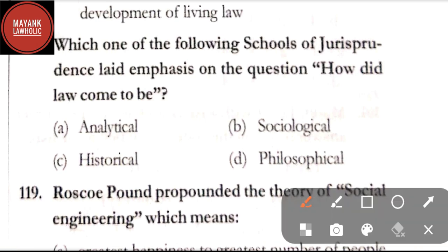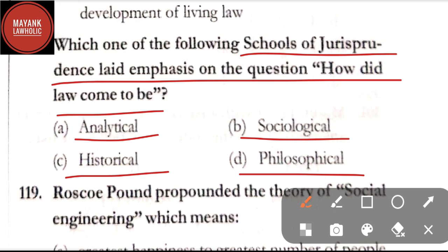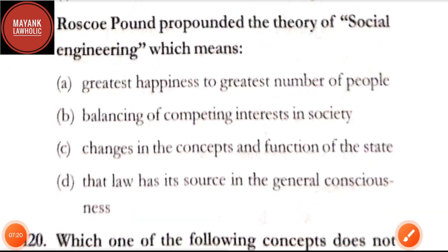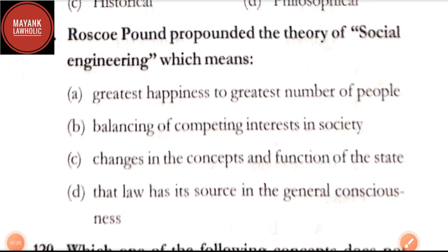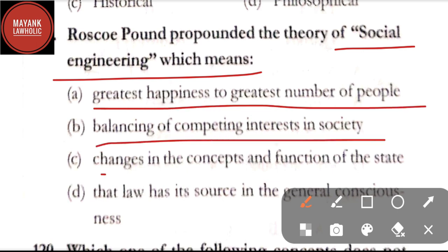Question number 118: which one of the following schools of jurisprudence laid emphasis on the question 'how did law come to be' — option A: analytical; option B: sociological; option C: historical; option D: philosophical. The correct answer is option C, historical school. Question number 119: Roscoe Pound propounded the theory of social engineering, which means — option A: greatest happiness to greatest number; option B: balancing of competing interests in societies; option C: changes in the concepts and functions of the state; option D: the law has its source in the general consciousness. The correct answer is option B.